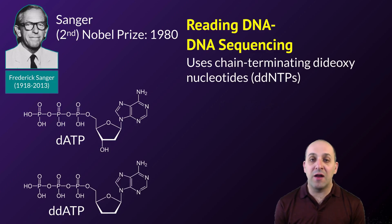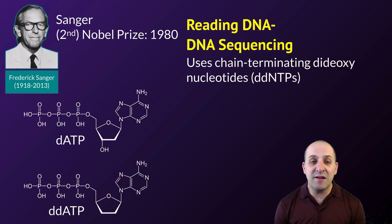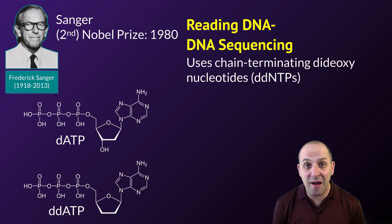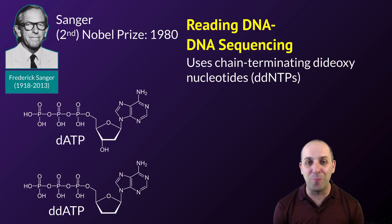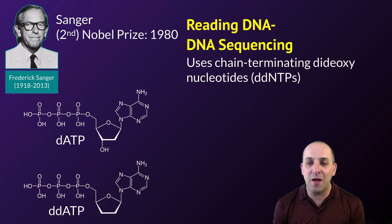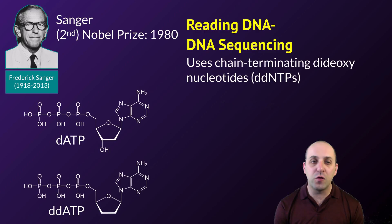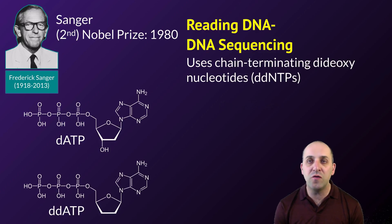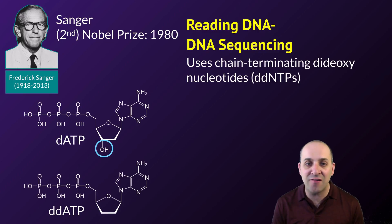The last tool we're going to talk about is DNA sequencing, which we use to read DNA. This technology was originally developed by Frederick Sanger, who won his second Nobel Prize in chemistry for this result. DNA sequencing uses chain-terminating dideoxynucleotides, or ddNTPs — modified nucleotides missing the 3' hydroxyl group. The key is to use a nucleotide that has a specific and identifiable tag. These tags are then visualized to determine the sequence of the molecule in question.